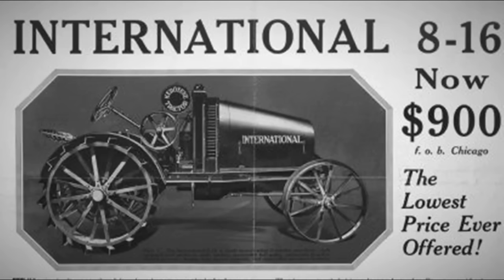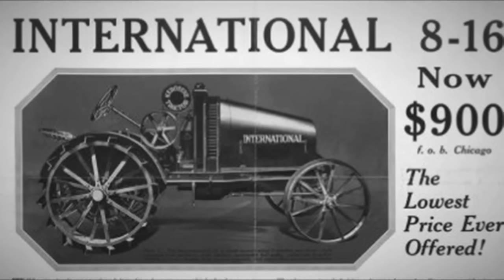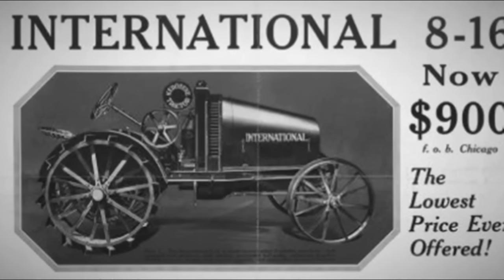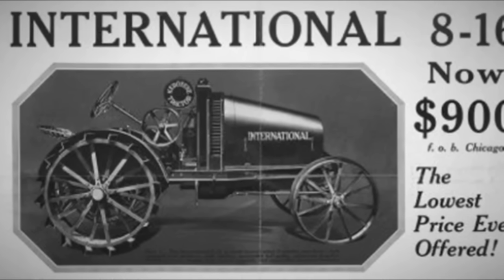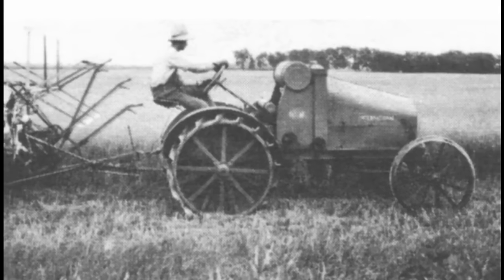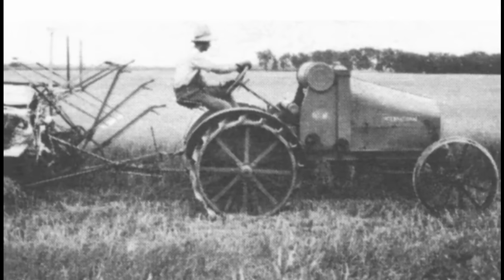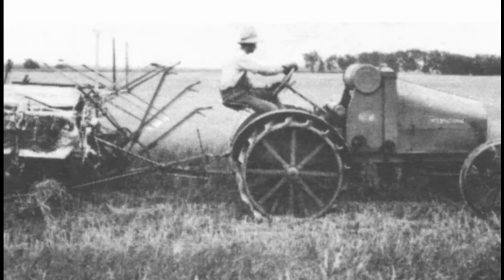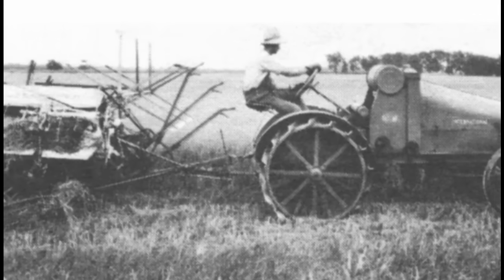In 1918, International Harvester introduced the International 816, which was optionally equipped with a power take-off shaft. The company not only added a PTO to a tractor but also designed implements that would work off the PTO. In subsequent developments by this company, the PTO was available for the McCormick Deering 10-20 and 15-30.